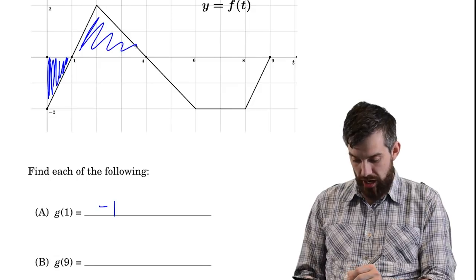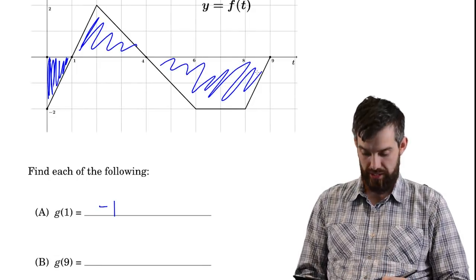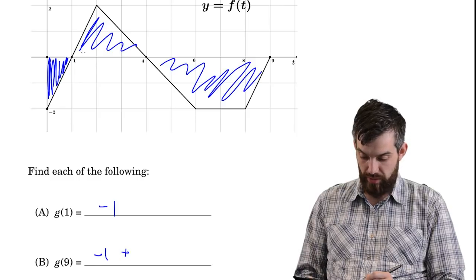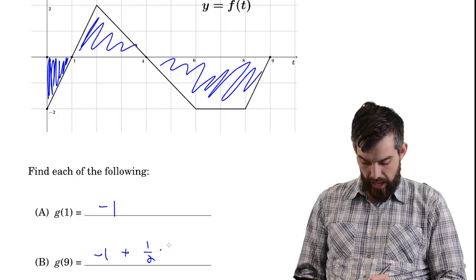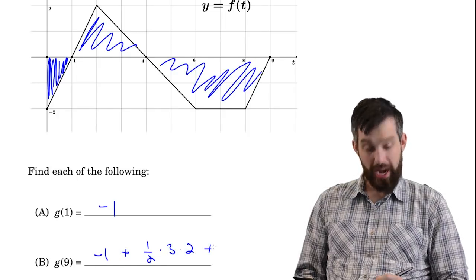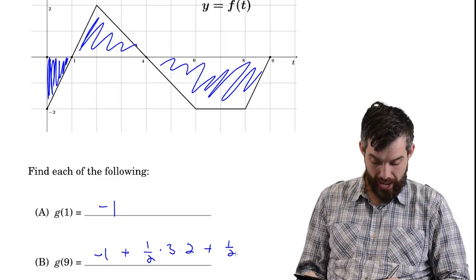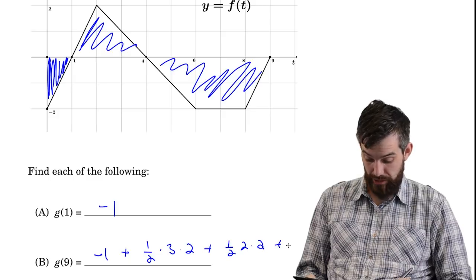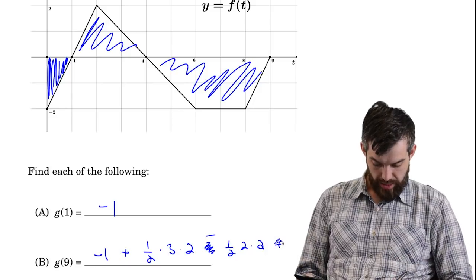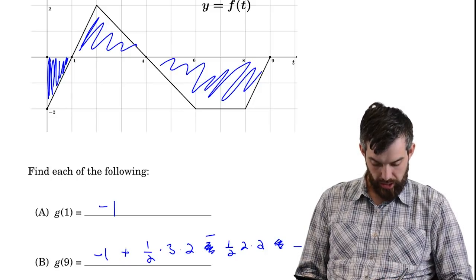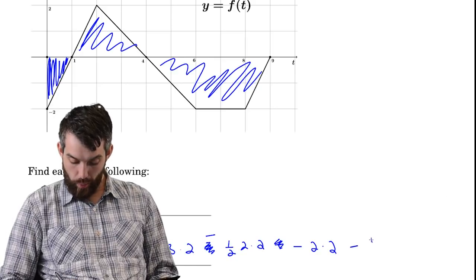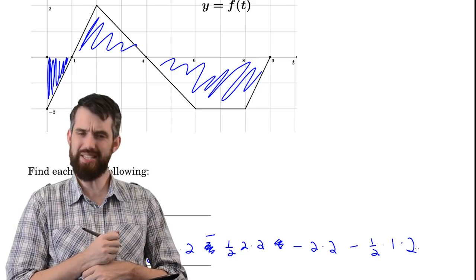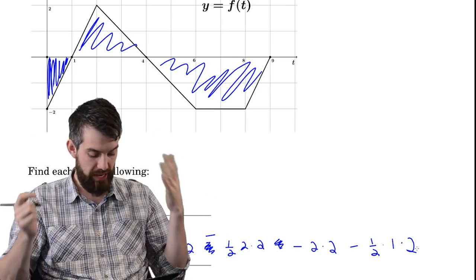For g(9), I accumulate all the signed areas out to 9. Starting from −1, I add a triangle from 1 to 4 with width 3 and height 2: area = one-half times 3 times 2 = 3. Then a triangle from 4 to 6 with width 2 and height 2: one-half times 2 times 2 = 2, but it's negative. Then a square from 6 to 8: minus 2 times 2 = −4. Finally a triangle from 8 to 9: one-half times 1 times 2 = 1, also below.